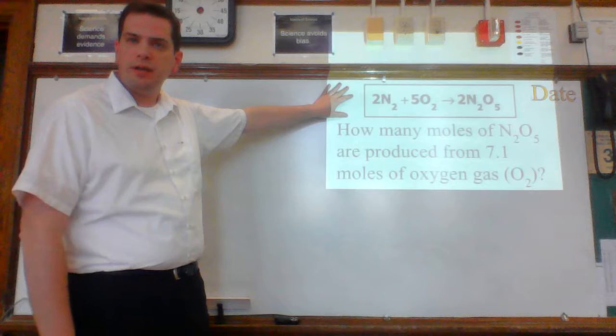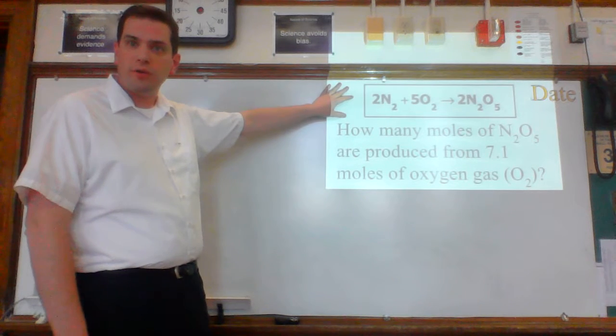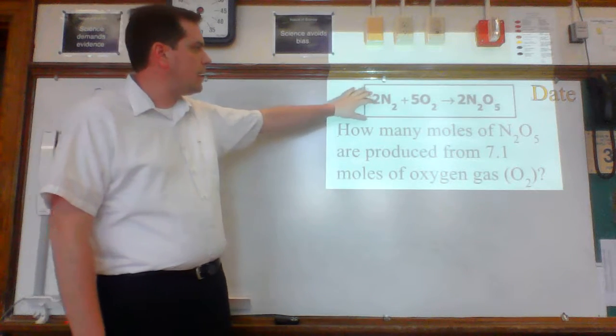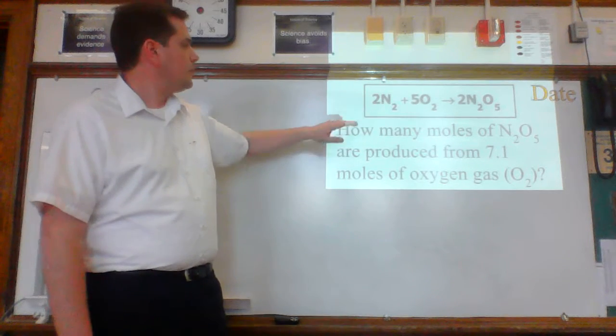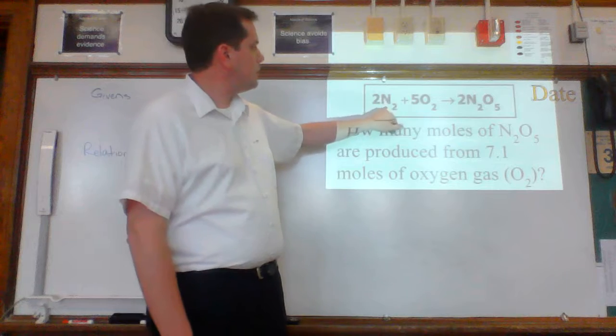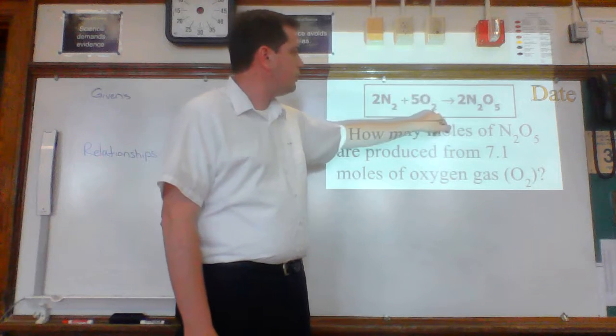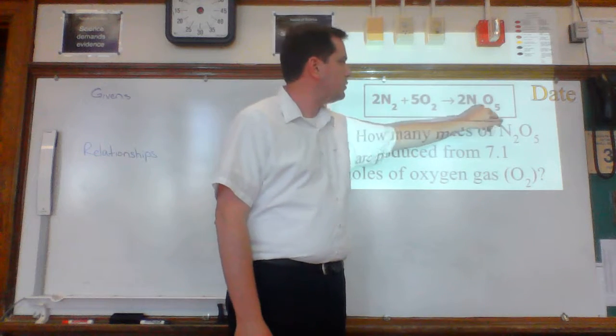Immediately when you look at an example like this, you should see it has something that other mole problems don't. It has a chemical equation, and this chemical equation should be balanced. 2N2 plus 5O2 yields 2N2O5.